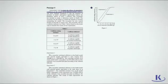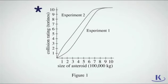Where is this pertinent information? Figure 1. Look at the ratings on the y-axis, and draw a line across from the number 4 to the lines for the experiments. Which experiment line matches a rating of 4 with a 400,000 kg asteroid?